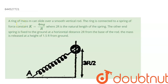A ring of mass m can slide over a smooth vertical rod. The ring is connected to a spring of force constant k equal to 4mg/r, where 2r is the natural length of the spring. The other end of the spring is fixed to the ground at a horizontal distance 2r from the base of the rod. The mass is released at a height 1.5r from the ground.